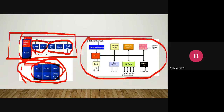The 8051 architecture places the CPU, about four kilobytes of program memory, 128 bytes of RAM, two timers, ports to connect to the external world, and a serial port for communication with other devices - all inside a single chip. That is how microcontrollers are designed. A microprocessor does not contain RAM and ports inside the chip, whereas a microcontroller contains the ports and memory inside the same chip where the CPU resides.